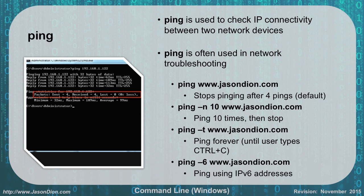Ping is used to check IP connectivity between two network devices. The name comes from the old World War II submarine sonar ping — it sends a signal out and waits for it to come back. Ping tells us how long it takes to reach a destination and whether it's up and running. In the example on the left, we pinged 192.168.1.122 with 32 bytes of data — the default. It sends four packets by default in Windows, returning times of 62ms, 189ms, 113ms, and 32ms. All four were sent, all four received, zero loss — that's a good connection.